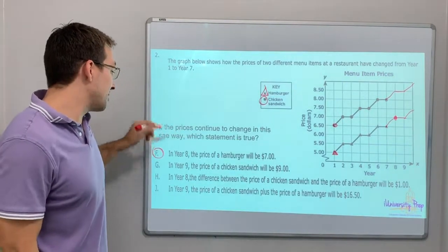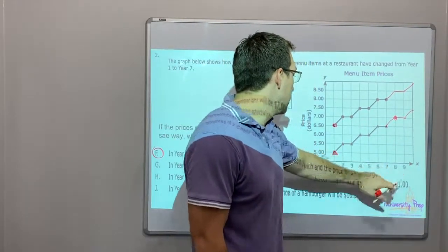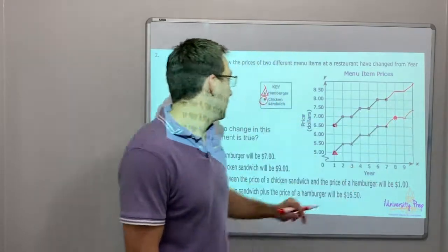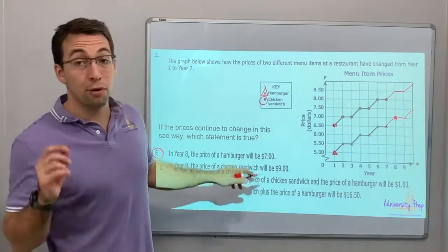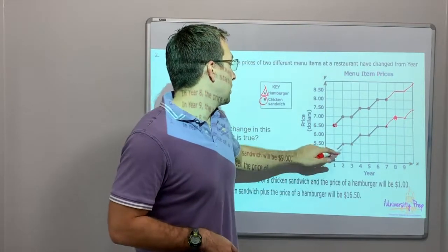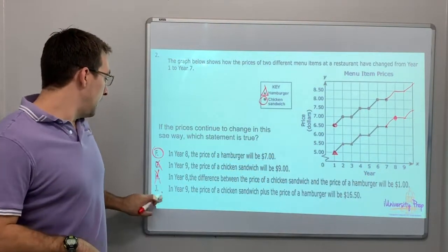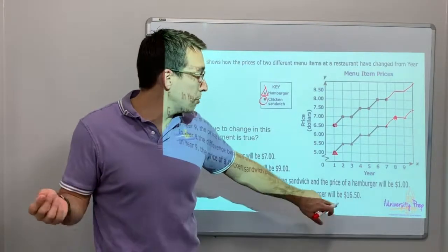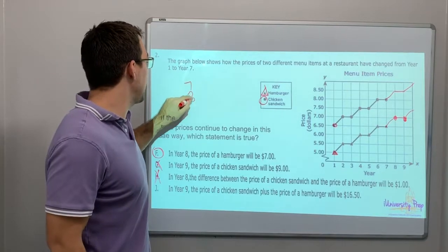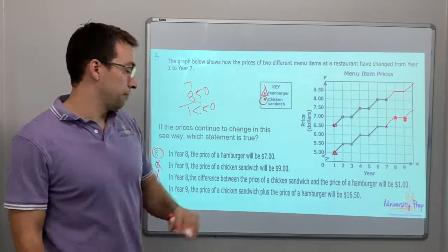If the price continues to change this way, which statement is correct? In year nine, the price of the chicken sandwich, the circle, will be nine dollars. Year nine will be 8.50. Nope, that is incorrect. In year eight, the difference between the price of the chicken sandwich and the price of the hamburger will be one dollar. Well, what's the difference every year? It's 5.50 and seven dollars, so that's a dollar fifty. That's wrong. And in year nine, the price of the chicken sandwich plus the price of the hamburger will be 16.50. Year nine, let's do seven dollars plus 8.50. Seven plus eight is fifteen, and then if you have 8.50, it'll be 15.50, so that's wrong. F is our answer.